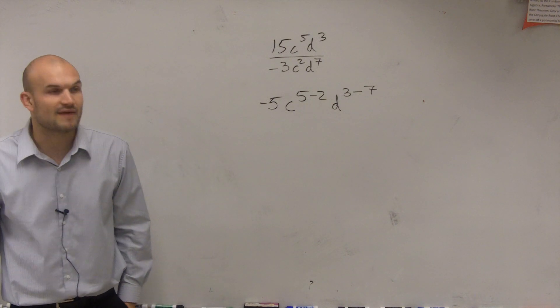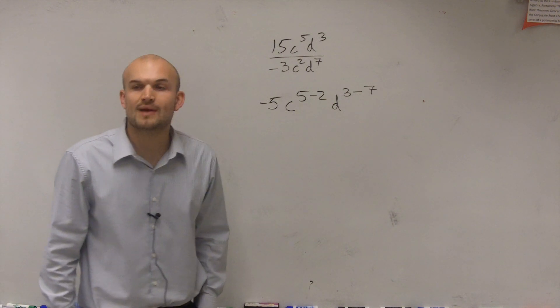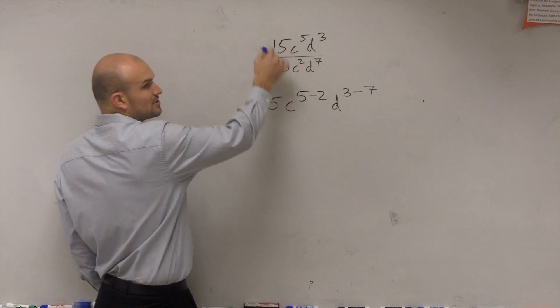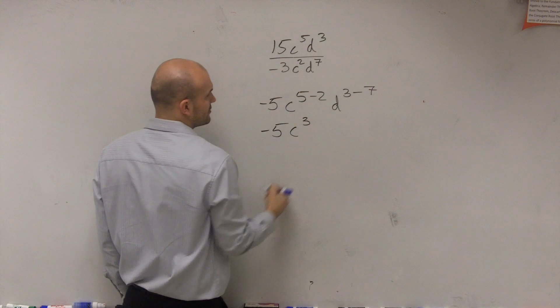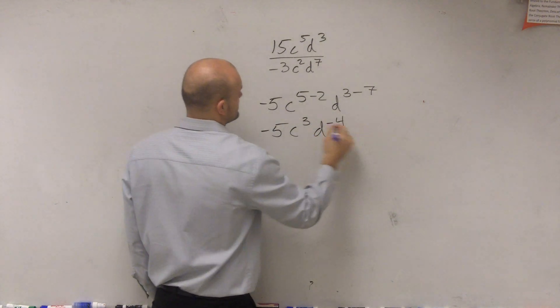When you're dividing with the same base, you subtract the powers. So therefore, and the numbers you just divide. So I have negative 5c to the third d to the negative fourth.